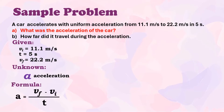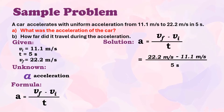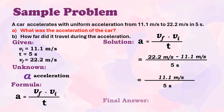The formula for acceleration is: final velocity minus initial velocity divided by time. 22.2 m/s minus 11.1 m/s is 11.1 m/s, divided by time which is 5 seconds. The answer is 2.22 m/s².